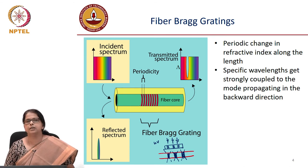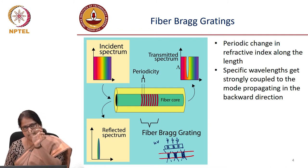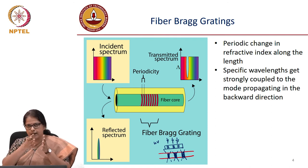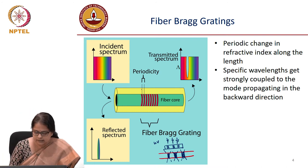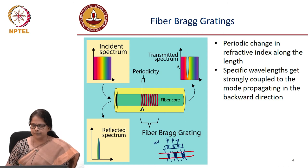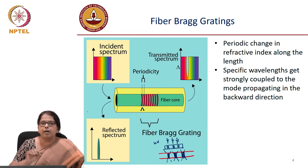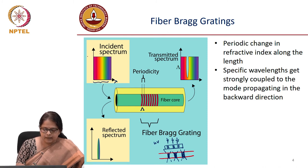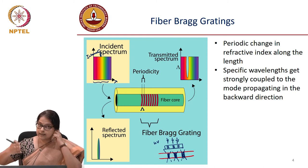There is a periodic change in refractive index along the length of the fiber. The typical length is anywhere from 1 mm to about 5 mm, and in that length you have periodic variations of refractive index with periodicity capital lambda. If you transmit broadband light through such a fiber Bragg grating — a sample incidence spectrum over wavelength — because of this periodicity in refractive index, the same reflection process happens.